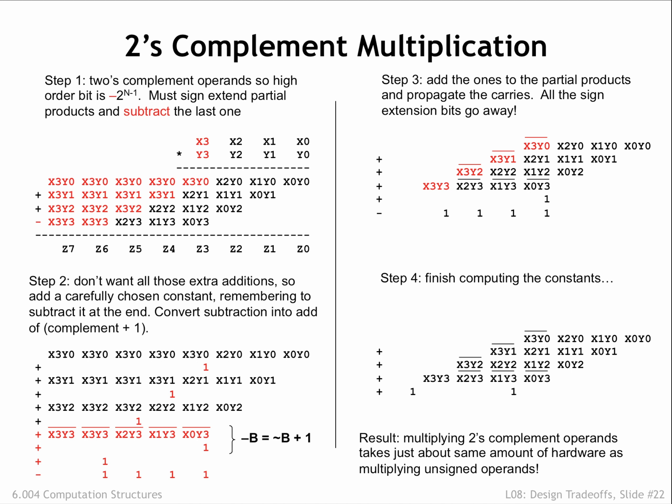Somewhat to our surprise, this isn't much different than the original table for the unsigned multiplication. There are a few partial product bits that need to be complemented, and two 1 bits that need to be added to particular columns.